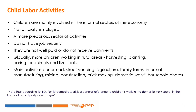Children usually do not participate in the formal wage labour market. They are mainly involved in the informal sector, which means they are not officially employed — they work in more precarious sectors, do not have job security, are not well paid, and sometimes do not receive payment at all. Activities include street vending, agriculture, family farms, informal manufacturing, mining, construction, brick making, domestic work, and household chores. Around the globe, the percentage of children working in rural areas is much higher than in urban areas; they work in fields and on farms, harvesting, planting, and caring for animals and livestock.